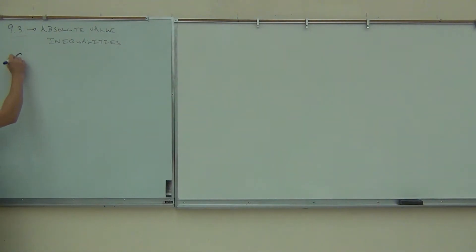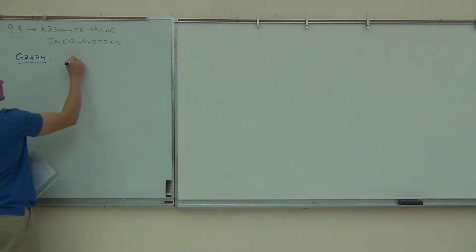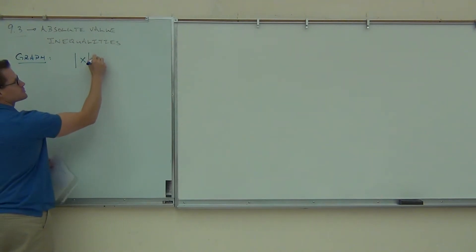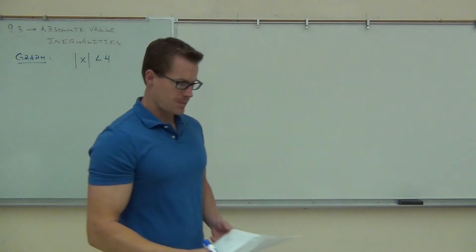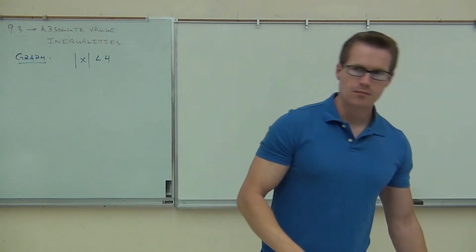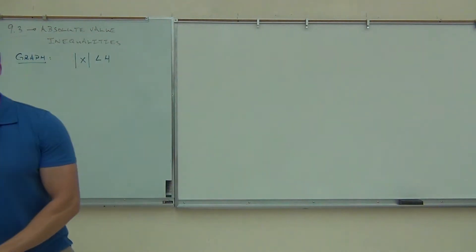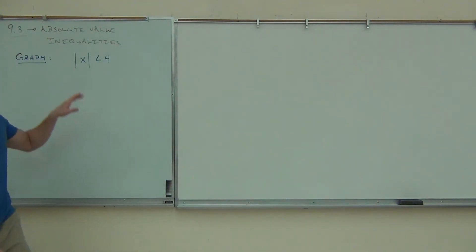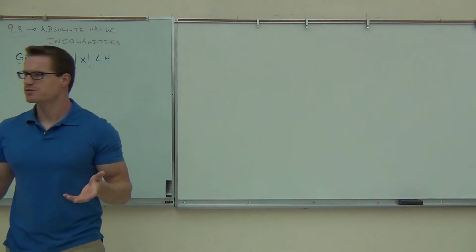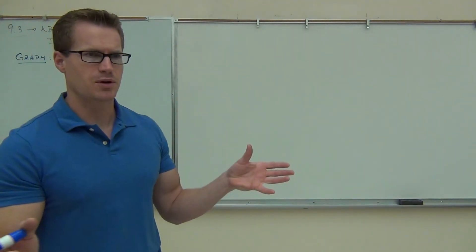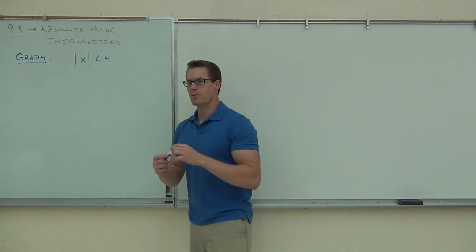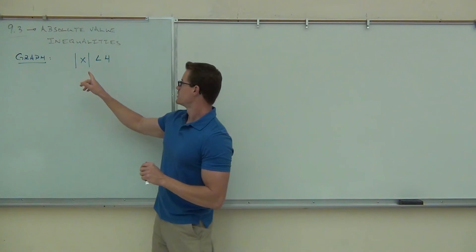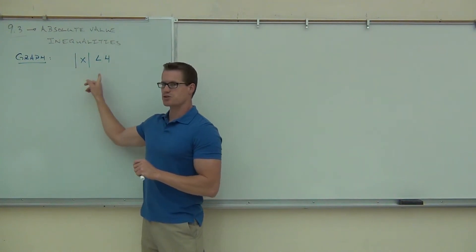Let's go ahead and graph — I'll explain — absolute value of x less than 4. What I'd like to do is start off by thinking about some of the numbers that are in this set. We all know what absolute value does: absolute value makes anything you put in there positive. If it's positive, it remains positive. If it's negative, it becomes positive. Can you give me a number that satisfies this inequality?